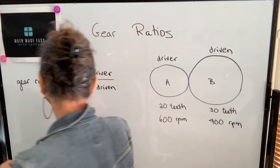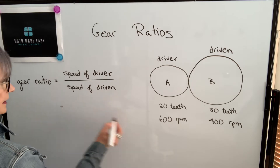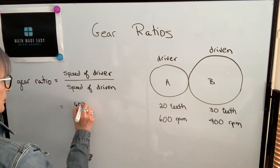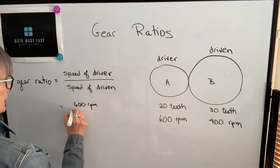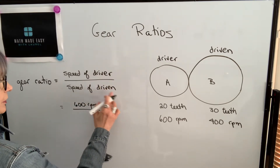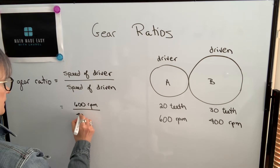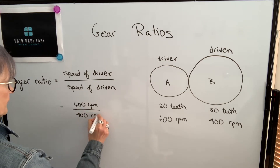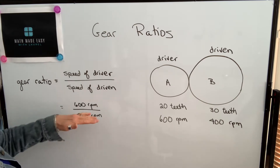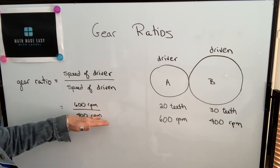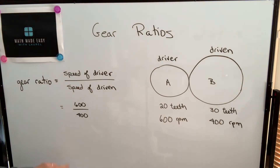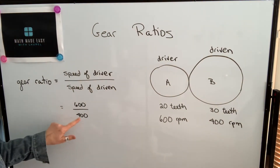So in our example, gear A is turning at 600 revolutions per minute. When you're working with ratios, you typically don't put units. You have to make sure the units are the same, and then you drop them. So the gear ratio would be 600 to 400.